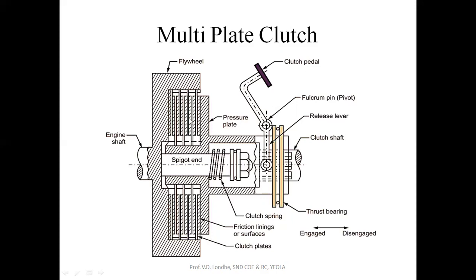All these clutch plates are held with the help of a pressure plate, and the pressure plate exerts pressure on the clutch plates with the help of a spring. This keeps the clutch plates in contact with each other and also in contact with the inner surface of the flywheel. The inner surface of the flywheel and the clutch plate surfaces both have friction lining material.